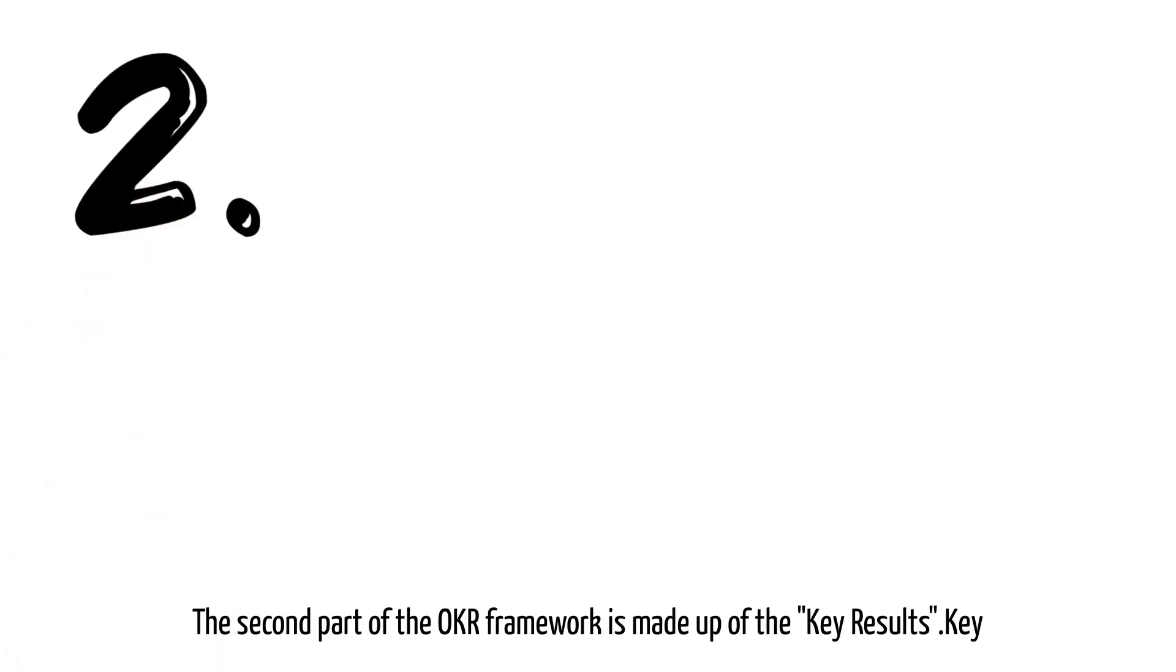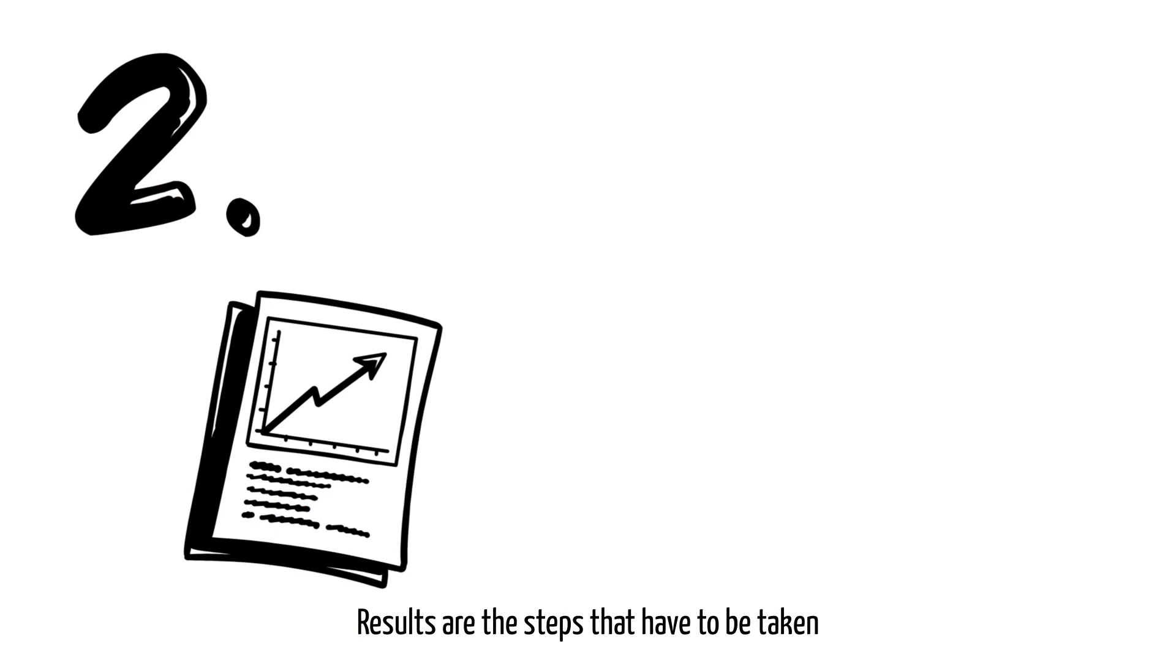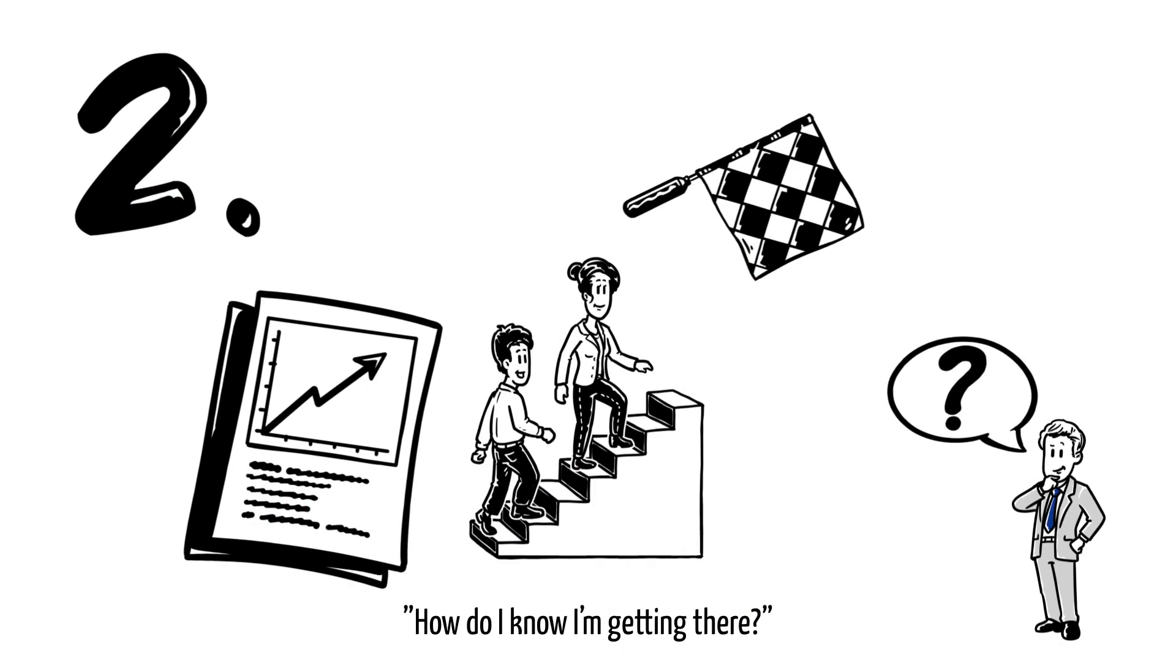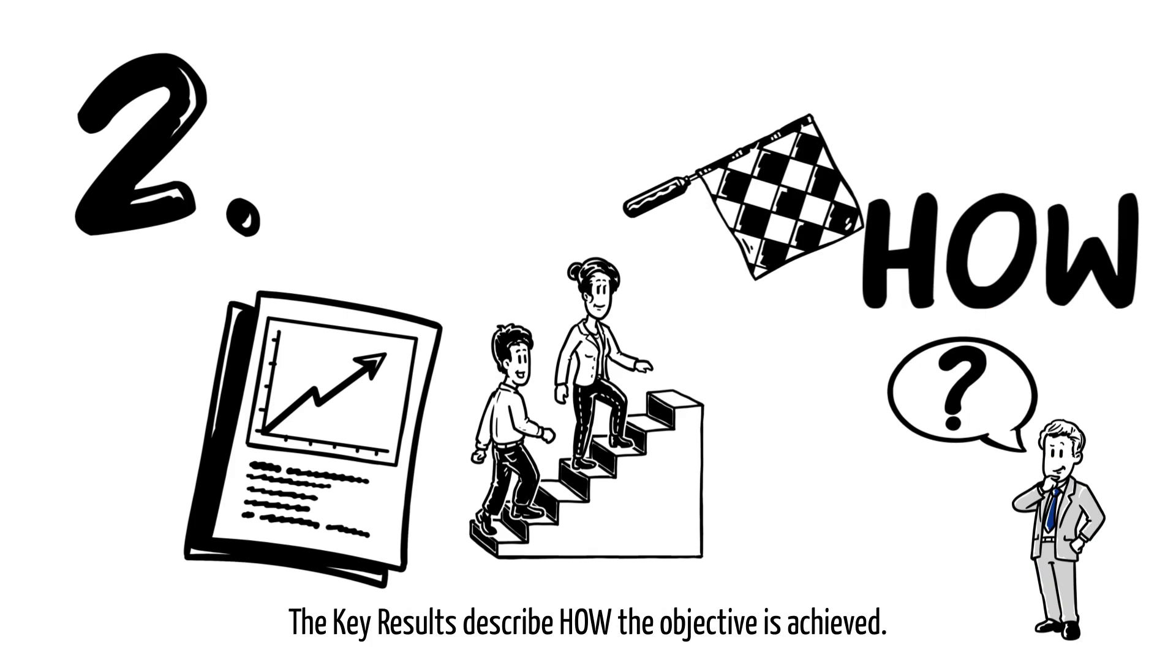The second part of the OKR framework is made up of the key results. Key results are the steps that have to be taken to achieve the objective and thus answer the question, how do I know I'm getting there? The key results describe how the objective is achieved.